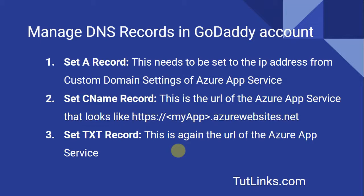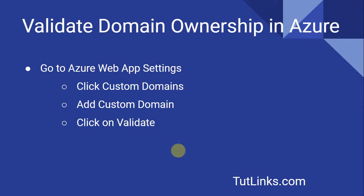Once you are done updating the DNS records in your GoDaddy account, you have to validate the domain ownership in Azure. All you have to do is go to the Azure web app settings, click on Custom Domains, then Add Custom Domain, and click Validate. You're done. Let's see that in demonstration.